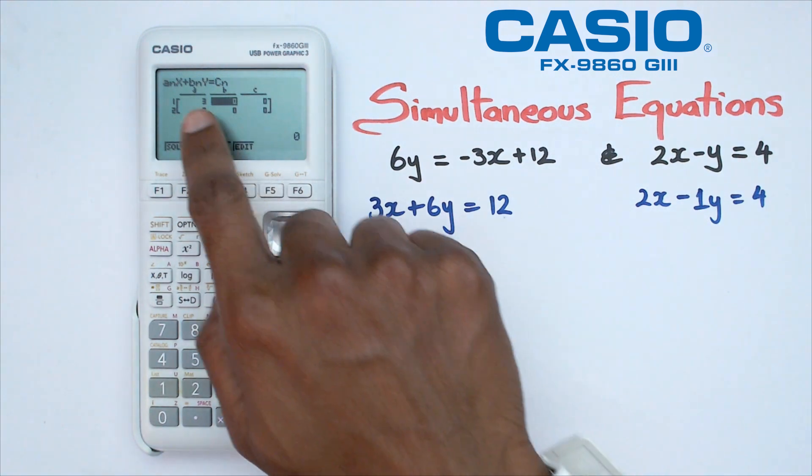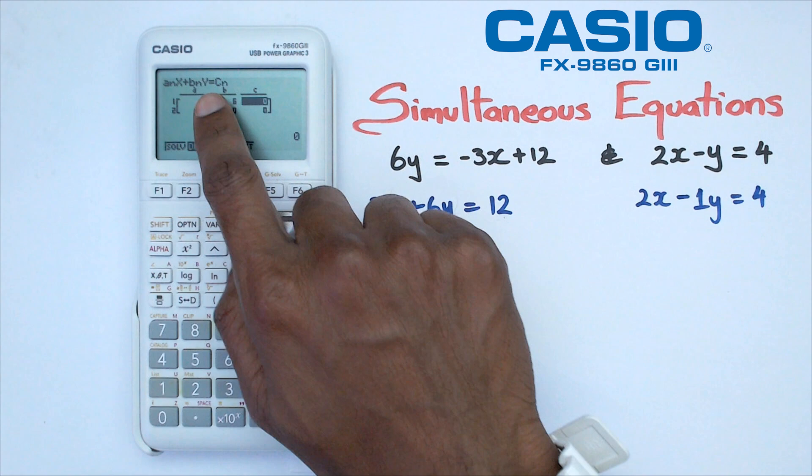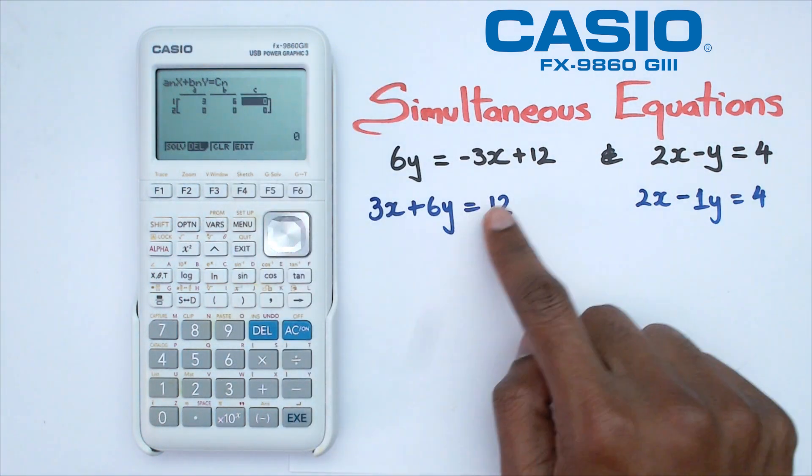Now I'm going to B, which is the coefficient of Y, which happens to be 6. And finally, C, which is the constant by itself. In this case, it is going to be 12.